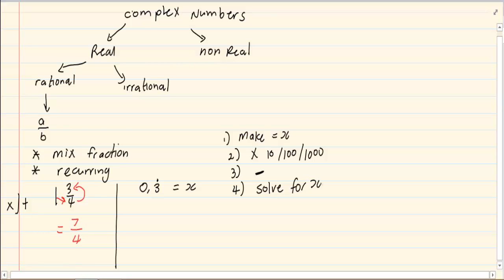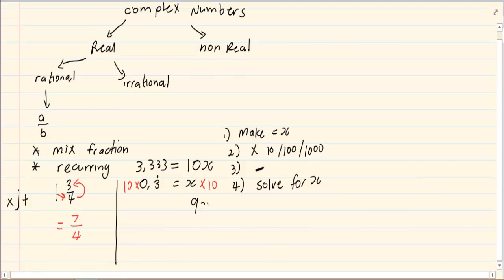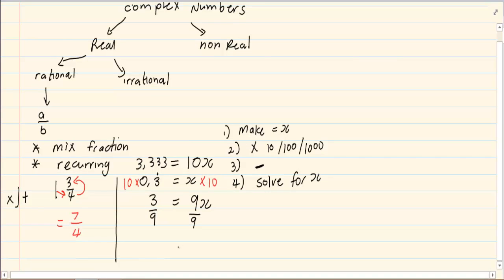So doing this example, 0.3 recurring is equal to x. I am going to times it by 10. So we have 10x is equal to 3.333... Then we are going to subtract. So 10x minus x is 9x, and 3.333... minus 0.333... is going to equal to 3. Then we divide by 9, which gives us x is equal to 1 over 3.